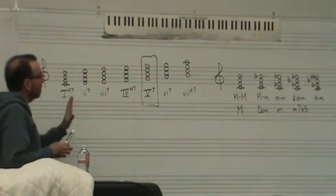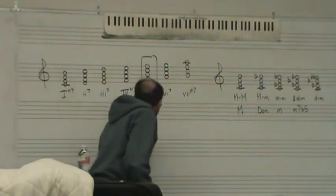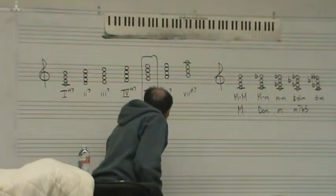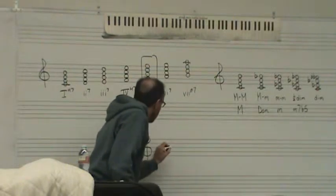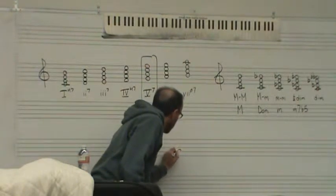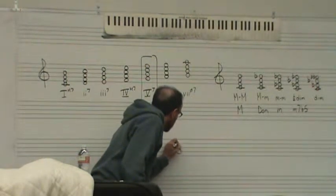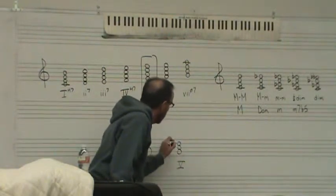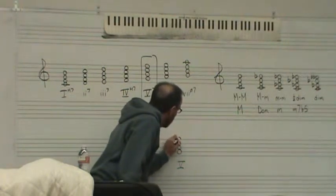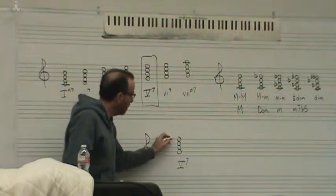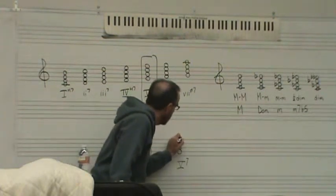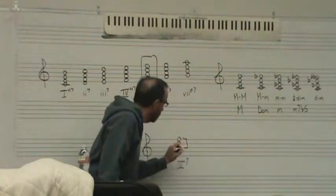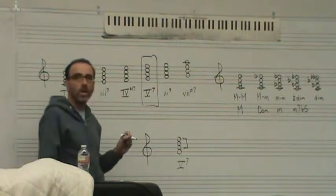So the reason the dominant seventh is so strong is because it's a dominant triad, right, plus that seventh on top. And when you put that seventh on top, between the third of the chord and the seventh of the chord, we have a tritone.